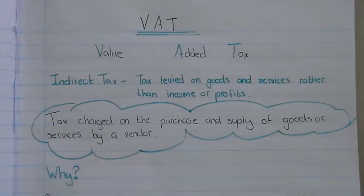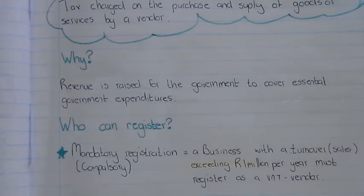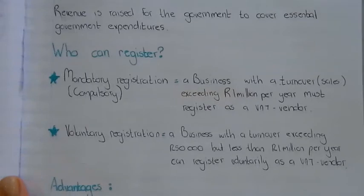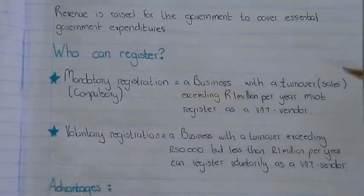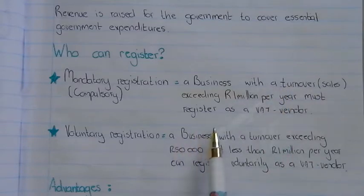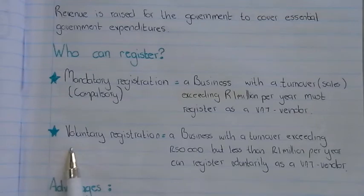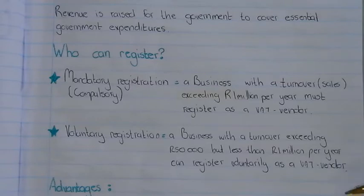VAT is a tax charged on the purchases and supply of goods or services by a vendor. Revenue is raised for the government to cover essential government expenditure. There are two types of VAT registration. The mandatory registration is compulsory for a business with a turnover — meaning sales exceeding one million rand per year. Voluntary registration applies when a business has a turnover exceeding fifty thousand but less than one million rand per year.